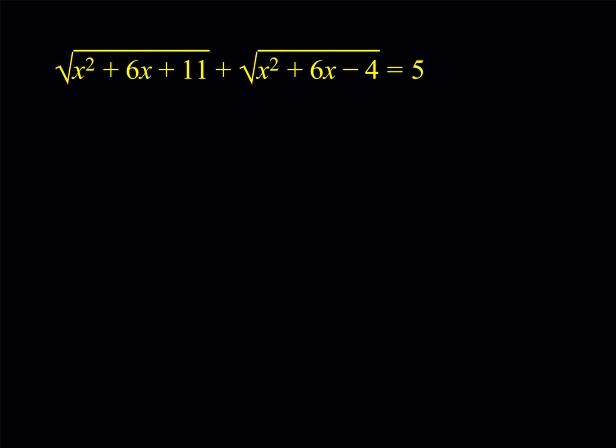So we have this radical equation: the square root of x squared plus 6x plus 11, plus the square root of x squared plus 6x minus 4, being equal to 5. And we're supposed to solve for real x.